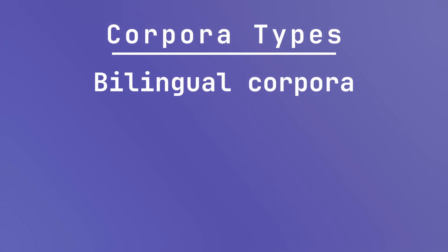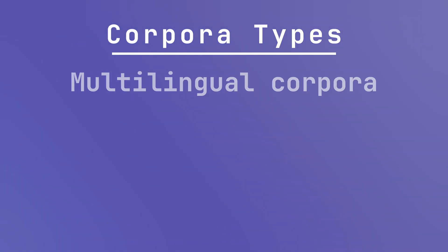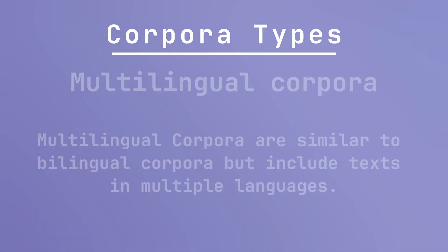Bilingual corpora contain parallel texts in two languages, which is particularly useful for translators as it provides direct examples of how specific terms or phrases are translated. Multilingual corpora are similar to bilingual corpora but include texts in multiple languages, beneficial for comparative linguistic analysis across different languages.